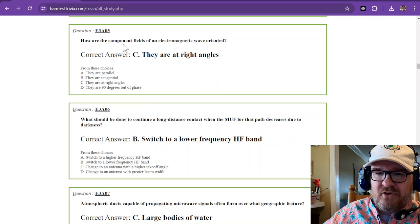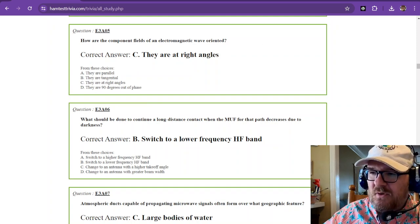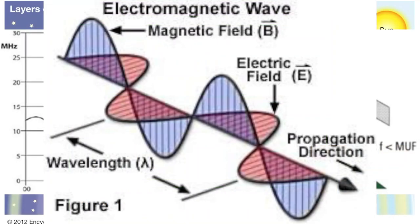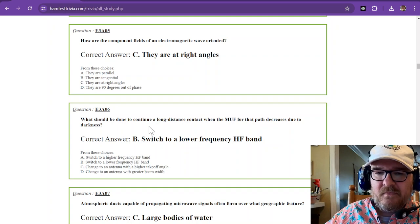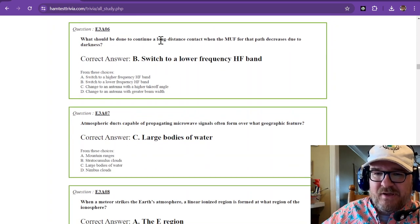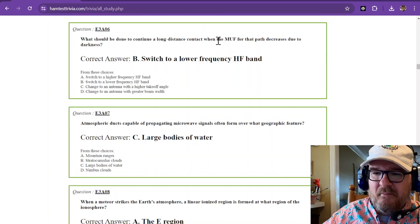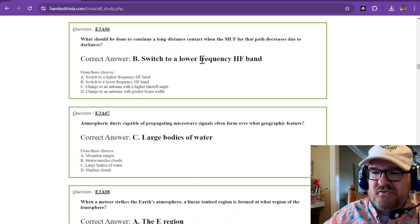How are the component fields of an electromagnetic wave oriented? They are at right angles. And that's what we just saw, was that the electric field and the magnetic field are at right angles to each other. What should be done to continue a long-distance contact when the maximum usable frequency, that's MUF, for that path decreases due to darkness? And that is to switch to a lower frequency HF band.